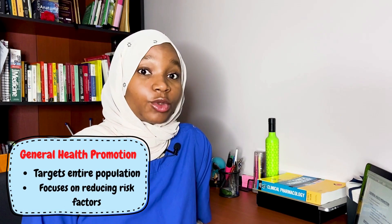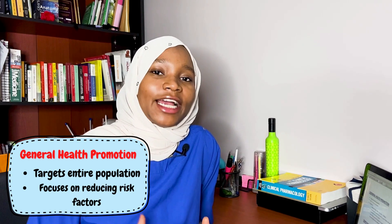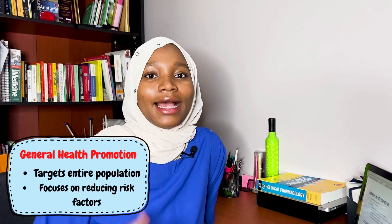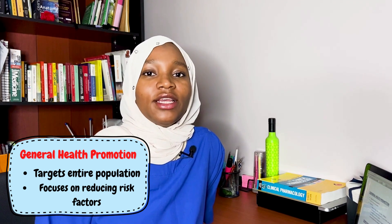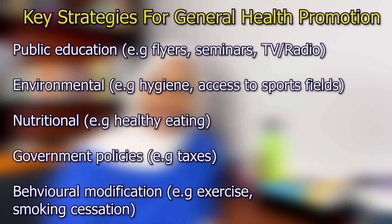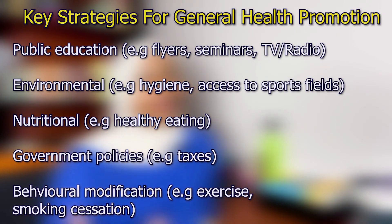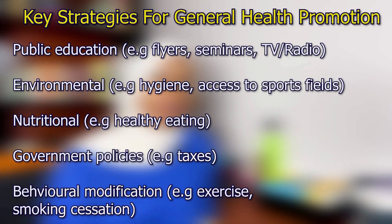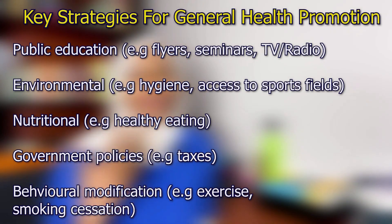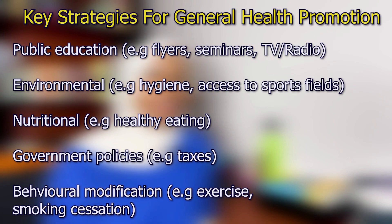The first level, general health promotion, targets the entire population — healthy people without the disease — and aims to reduce risk factors. It focuses on public education through flyers, seminars, TV and radio shows; environmental factors like sanitation and sewage disposal; access to sports fields; nutritional interventions like healthy eating for chronic diseases like hypertension and diabetes; government policies like increasing taxes on fast food and cigarette companies; and behavioral and lifestyle modification like exercise and smoking cessation.